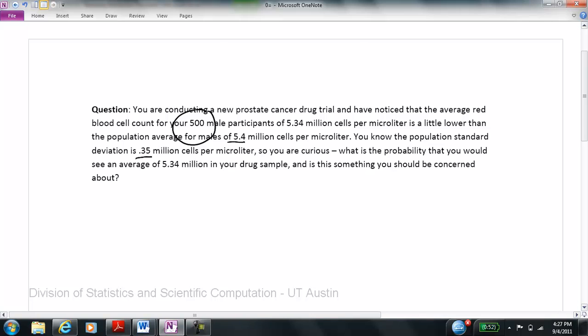So what is this question asking us? We know from the question that the average male has 5.4 million red blood cells per microliter of blood. This is our population mean. We also know that there is a standard deviation of 0.35. So we know it looks something like this. So we are curious here, is what we are seeing in our sample of 500 men, 5.34 million cells instead of 5.4 for our average, is that unusual? Is that something that we could imagine to be noise? Is it reasonable for us to see this? Or is this something that really we should be concerned about given the fact that it is lower than the population average of 5.4?